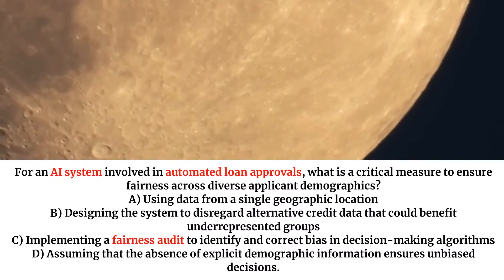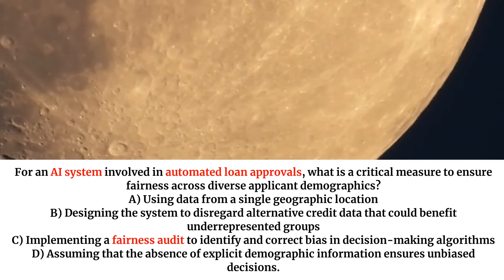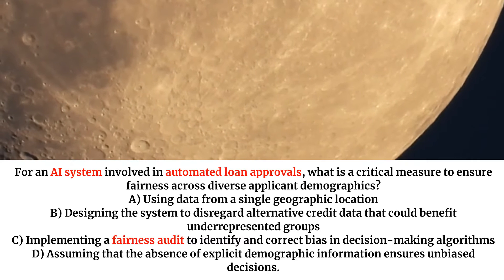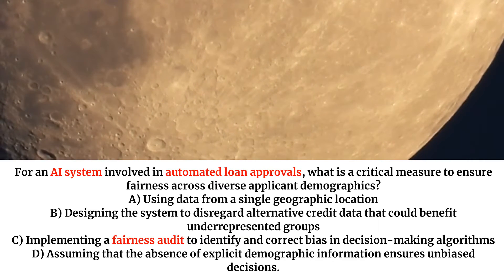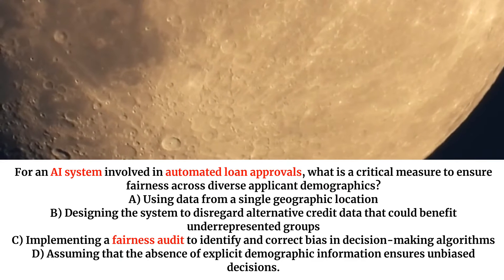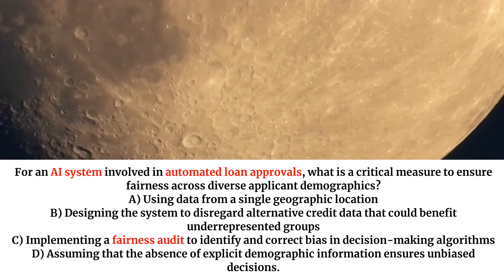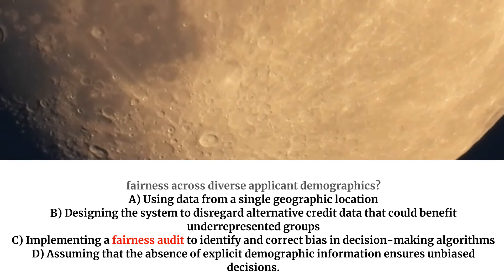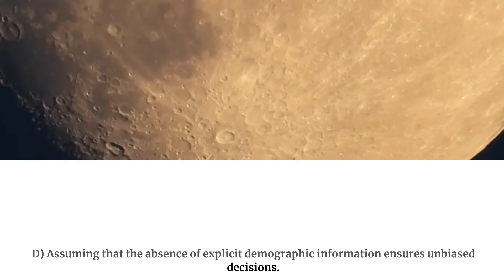For an AI system involved in automated loan approvals, what is a critical measure to ensure fairness across diverse applicant demographics? A. Using data from a single geographic location. B. Designing the system to disregard alternative credit data that could benefit underrepresented groups. C. Implementing a fairness audit to identify and correct bias in decision-making algorithms. D. Assuming that the absence of explicit demographic information ensures unbiased decisions.